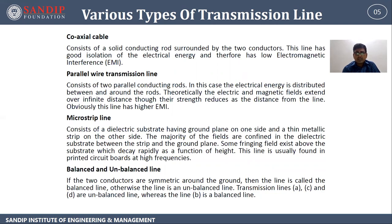Second is parallel wire transmission line. It consists of two parallel conducting rods. In this case, the electrical energy is distributed between and around the rods. Theoretically, the electric and magnetic fields extend over infinite distance, though their strength reduces as the distance from the line increases. Obviously, this line has higher EMI.